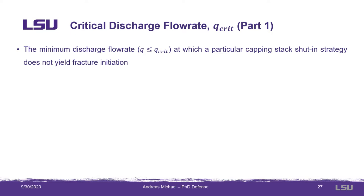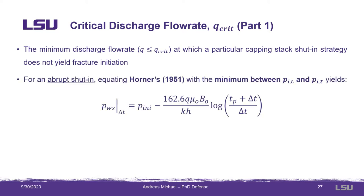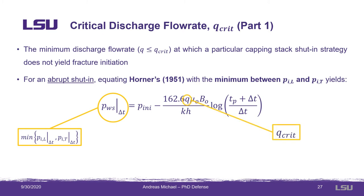Q-Crit is a value unique to a capping stock shut-in strategy and can serve as an indicator of whether fracture initiation would be induced or not following capping. If the actual discharge flow rate from the well is higher than Q-Crit, then fracture initiation is not expected. The simplest capping stock shut-in strategy is the single-step abrupt shut-in. We start from Horner's 1951 expression for the shut-in wellbore pressure, replacing it with an appropriate fracture initiation pressure expression — the minimum between the longitudinal and transverse fracture initiation pressures from the Heimstone and Fairhurst equations. Rearranging for flow rate gives us an expression for Q-Crit.